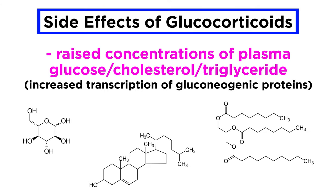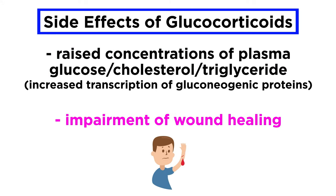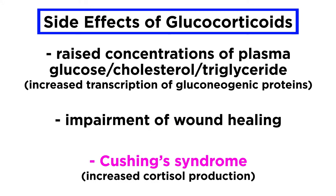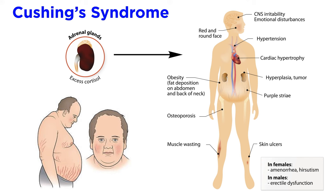Other notable side effects include raised concentrations of plasma glucose, cholesterol, and triglyceride, due to the increased transcription of gluconeogenic proteins. Glucocorticoids also impair wound healing because some aspects of the inflammatory and immune systems are required for wound healing. Excessive long-term use of glucocorticoids can also lead to Cushing's syndrome, which usually manifests as a result of increased production of cortisol, the endogenous agonist for the glucocorticoid receptor, synthesized in the adrenal cortex. Cushing's syndrome causes face rounding, weight gain with associated increase in body fat, thinner skin, increased risk of bruising, bone weakness, high blood pressure, and depression.